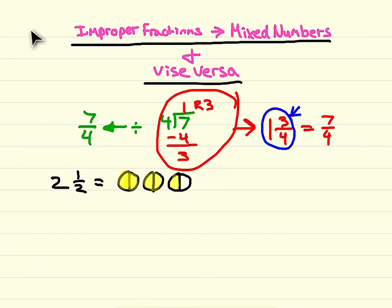Here I have 2 and 1 half circles completely filled in. But if you notice, I have 1, 2, 3, 4, 5 pieces shaded in with a denominator of 2 because they're each divided into 2 equal pieces.